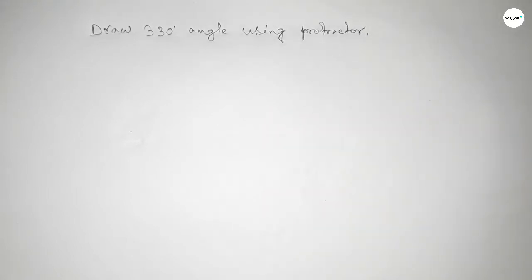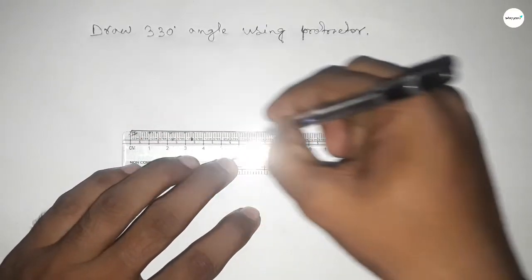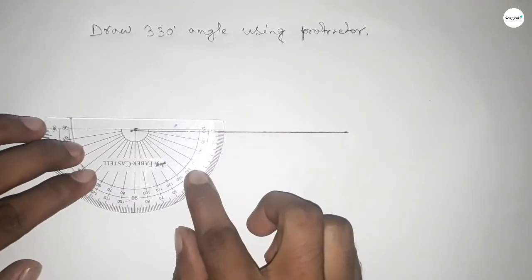So let's start the video. First of all, we have to draw here a straight line of any length. First drawing here a line, next pointing out here to draw 330 degree angle on this point.